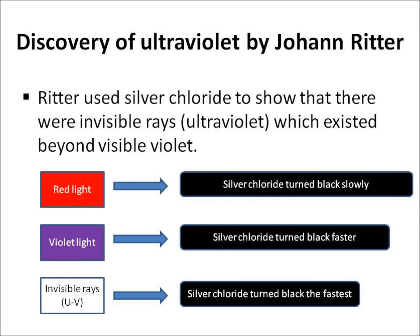But when using a prism, he shone some light which could not be seen, which was near the violet end of the spectrum, and silver chloride turned black the fastest. So this invisible radiation which turned silver chloride black the fastest was called ultraviolet.